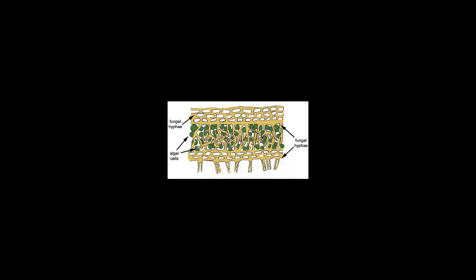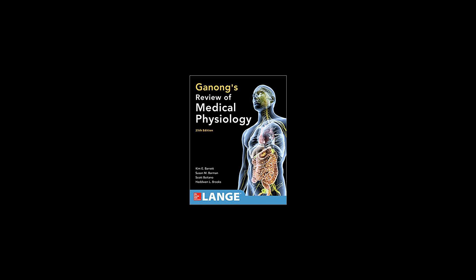Lichen associations may be examples of mutualism, commensalism or even parasitism, depending on the species. Cyanobacteria in laboratory settings can grow faster when they are alone rather than when they are part of a lichen.